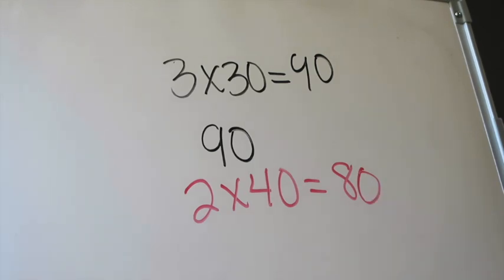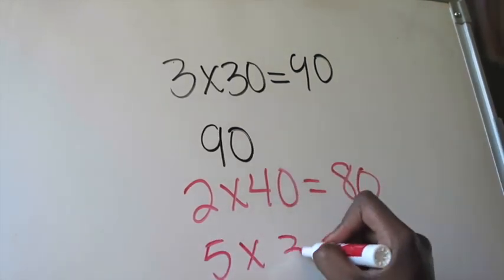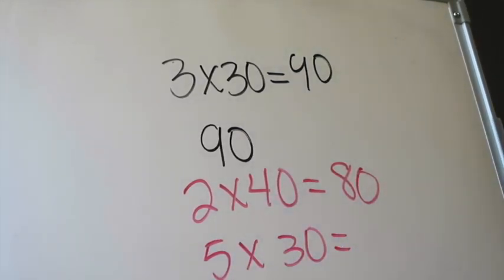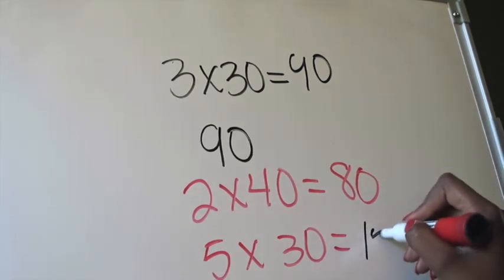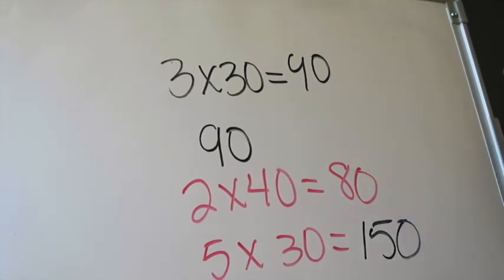Let's do one more. Let's do 5 times 30. Okay. Ignore the zero. 5 times 3 is fifteen. Are there any zeros left over? Yep, there was one. I'm going to tack that on to the end. 5 times 30 is going to be one hundred and fifty.